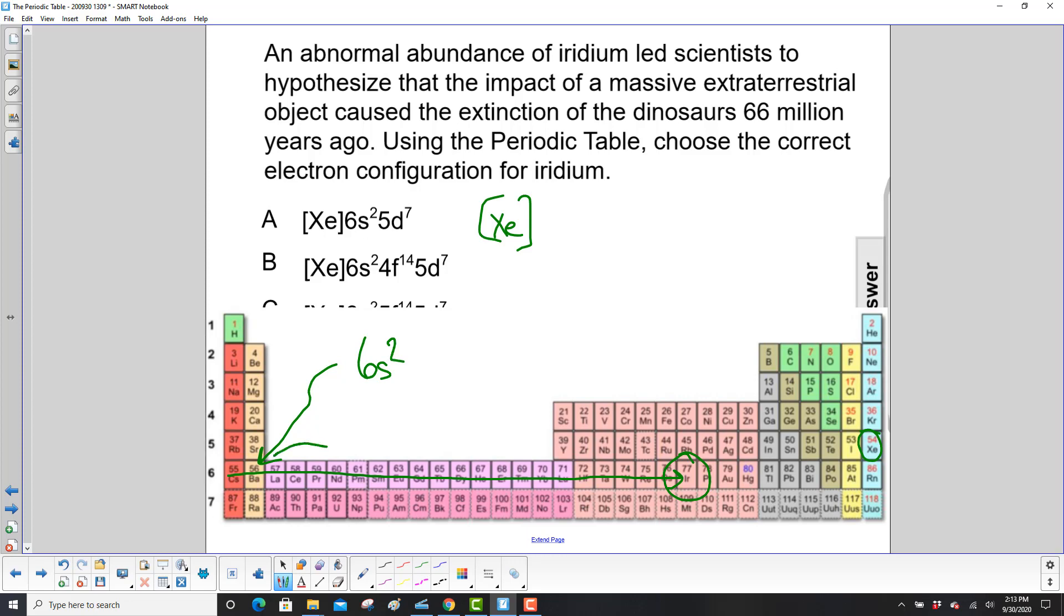Then we fill all of the f electrons, and that's 4f in this case, so that's 4f14. Now we have 5d over here, and we count over 7 until we hit iridium. So what do we have? Our answer is B.